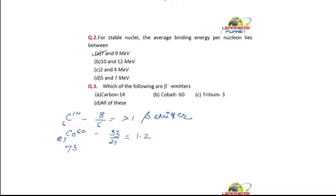Tritium (3,1), the ratio is 2 by 1. It is of course a beta emitter. So all of these are beta emitters.